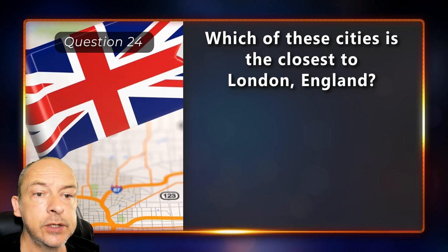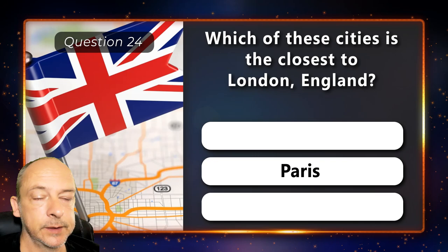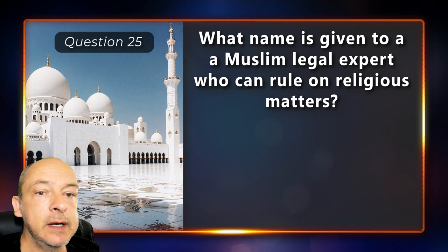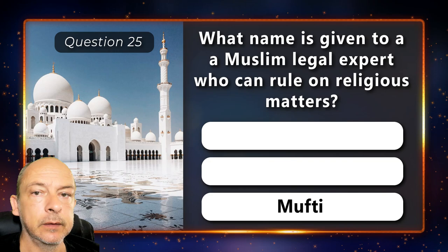Which of these cities is the closest to London, England — is it Amsterdam, Paris or Dublin? Paris. What name is given to a Muslim legal expert who can rule on religious matters — is it an imam, emir or a mufti? A mufti.